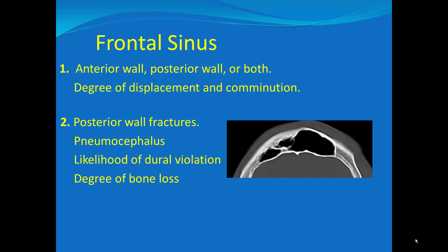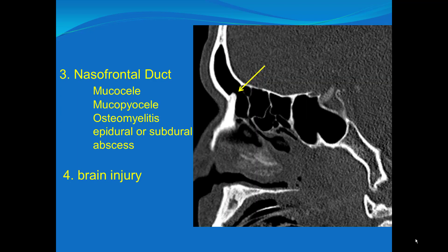In frontal sinus fractures, you want to discuss whether the anterior wall, posterior wall, or both are fractured. Comment on the comminution and degree of displacement. If the posterior wall is fractured, look for pneumocephalus, dural violation, and degree of bone loss, because the posterior wall is part of the calvarium. Any violation has neurosurgical implications, particularly if there's pneumocephalus or dural violation. Also with frontal sinus fractures, keep an eye on the naso-frontal duct. If it becomes obstructed, the frontal sinus can't drain, increasing the risk of complications such as a mucocele, mucopiocele, osteomyelitis, or epidural and subdural abscesses.